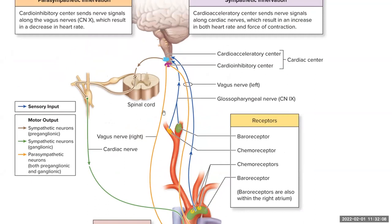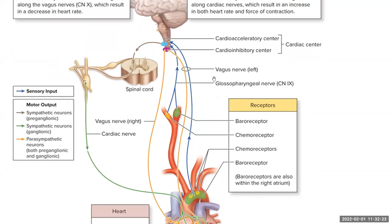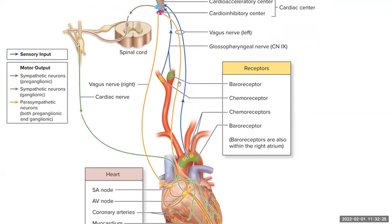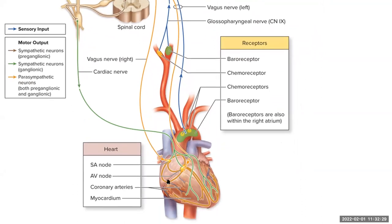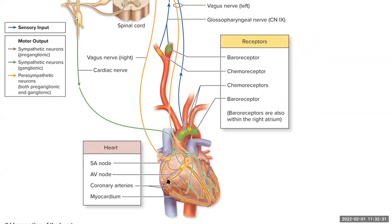If your blood pressure is too high, the receptors pick up that information, relay it to the cardiac center, and we activate the cardioinhibitory center. The cardioinhibitory center is part of the parasympathetic nervous system, and it will activate via the right and left vagus nerves to slow down the heart rate by slowing the action potential discharge in the SA node and the AV node.